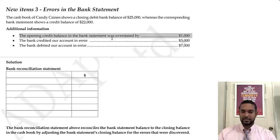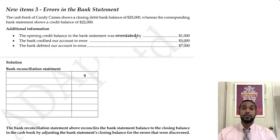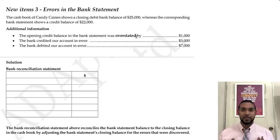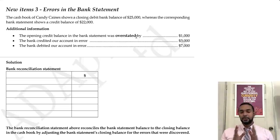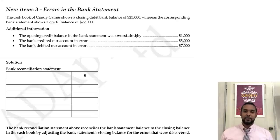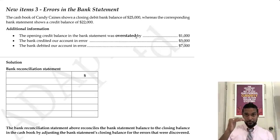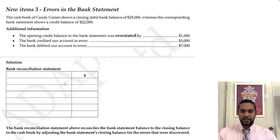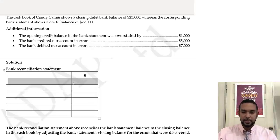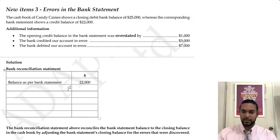The opening credit balance in the bank statement was overstated — meaning the amount was too high. We don't directly affect changes in the bank statement, so we make an adjustment in the bank reconciliation statement. If the bank balance is too high, we have to bring it down — that's a deduction in the bank rec. We start with the bank statement balance of $22,000 and deduct $1,000 for the overstated credit balance at start.